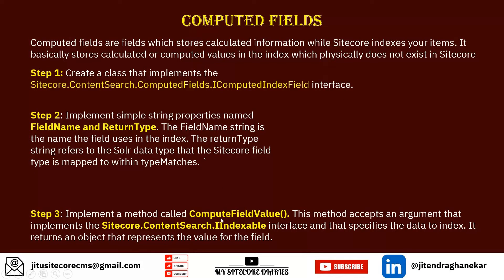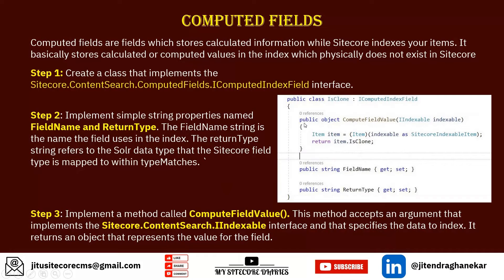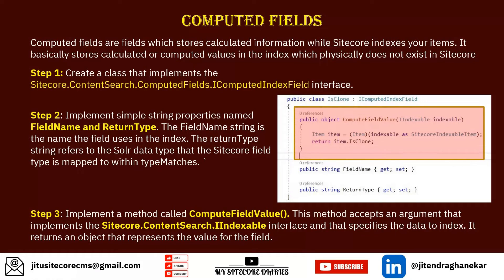Step 3: implement the method `ComputeFieldValue`. This method accepts an argument of type `Sitecore.ContentSearch.IIndexable`. Here you write the logic you want to compute — for example, computing an `IsClone` property. Whatever logic you want for the computed field goes in this method, and the return value is the value of that field.